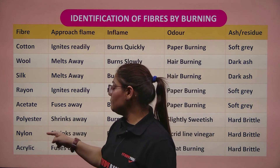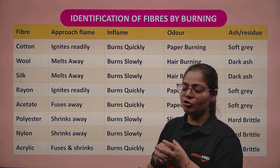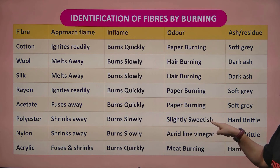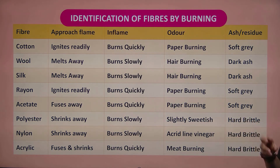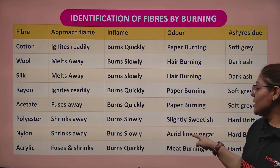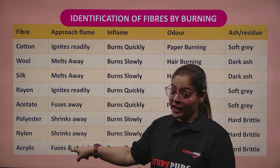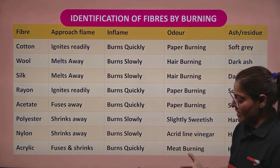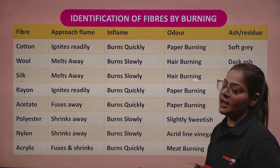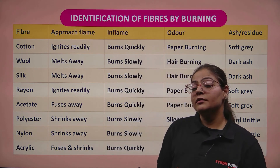Polyester and nylon shrink away when you burn them, similar to plastic burning — they always shrink when you apply heat and burn slowly. In the case of polyester, it gives a slightly sweetish odor and becomes hard and brittle at the end, just like burning plastic. In the case of nylon, it gives the smell of acetic acid or vinegar and also becomes very hard and brittle. Acrylic also fuses and shrinks on burning but burns very quickly, the smell is of burning meat, and it again becomes very hard and brittle after burning. So after this, nobody can fool you about the type of fabric they are selling you — you can easily identify them.